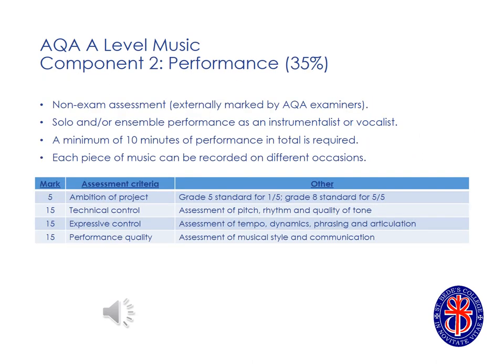For the performance component of A Level Music, students need to perform as a soloist or as part of an ensemble for a minimum of 10 minutes. The final recordings will take place in school in March and April of Year 13, and these are then sent to the exam board to be marked by an examiner. The performance is marked out of 50, with a mark out of 5 for the ambition of the project, a mark out of 15 for technical control, a mark out of 15 for expressive control, and a further mark out of 15 for performance quality.